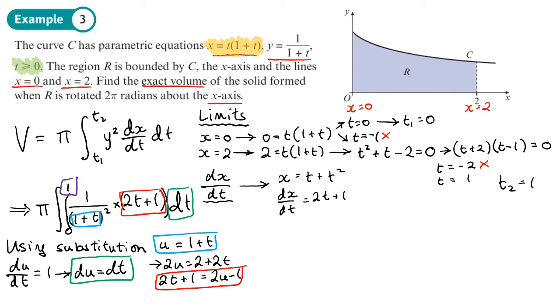And then the limits. We need to change the limits because these are t limits when changing to u limits. So when t is 1, using this, I will get u equal to 2. And when t is 0, that lower limit, I will get u equal to 1. That will be my substitution. So let's make all of these substitutions now.